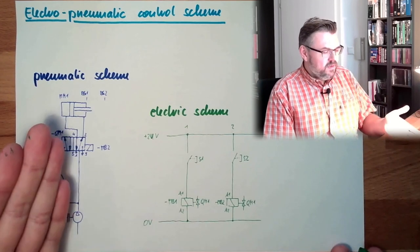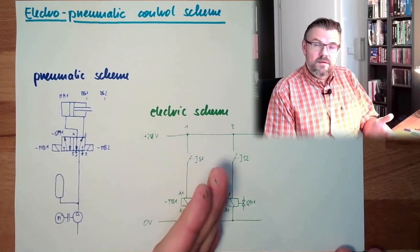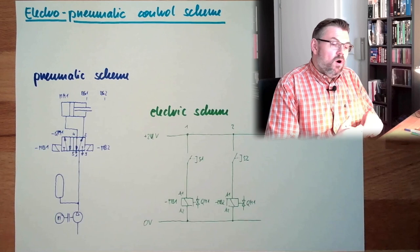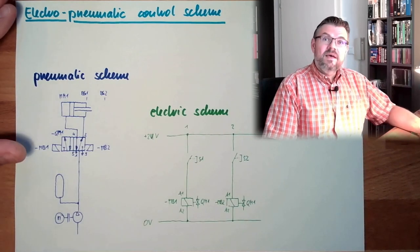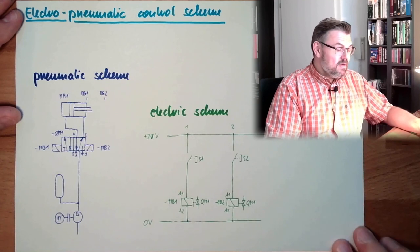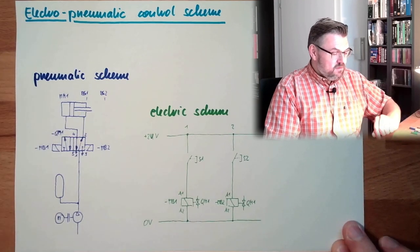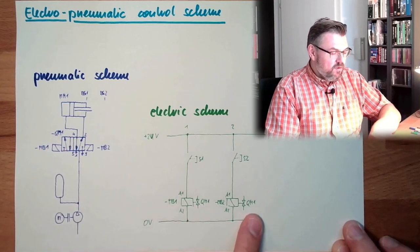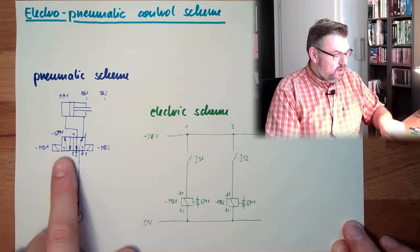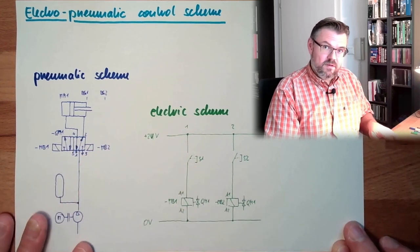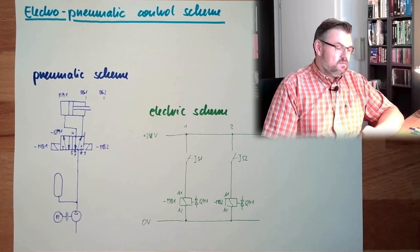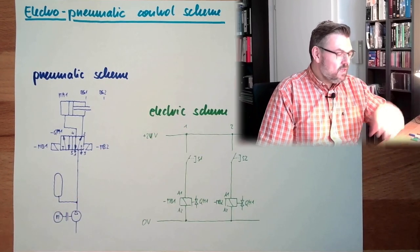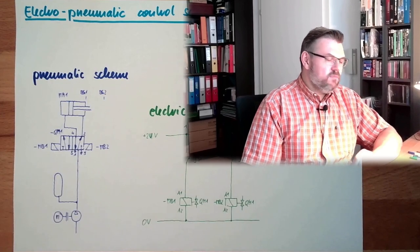So we have two parts, pneumatic scheme, electric scheme. Might be in one diagram, one sheet, or might be in separate sheets. The bonding elements are the names. You see, there is QM1, I find QM1 here and here, there is MB1 and so on. I can map these things, and then I realize what is happening.